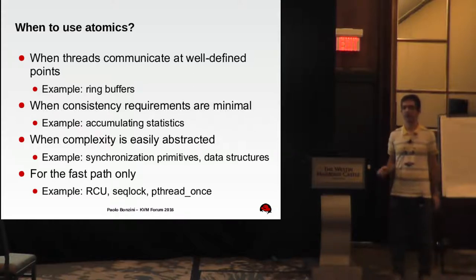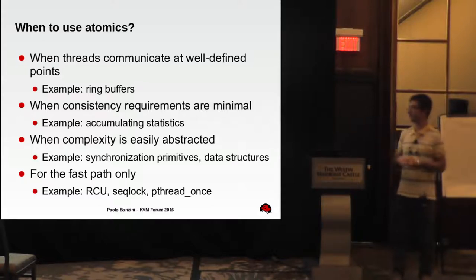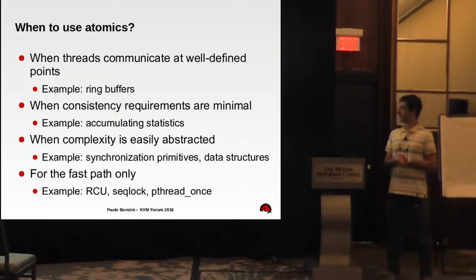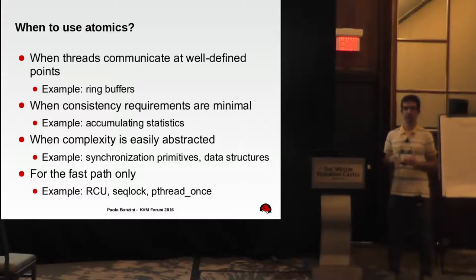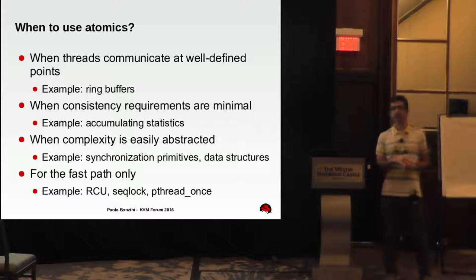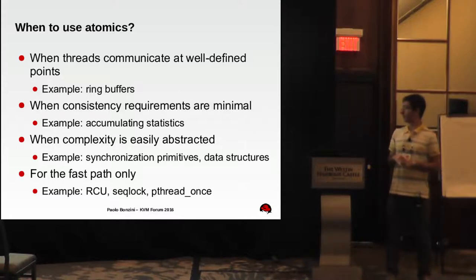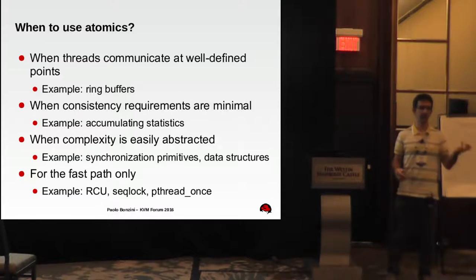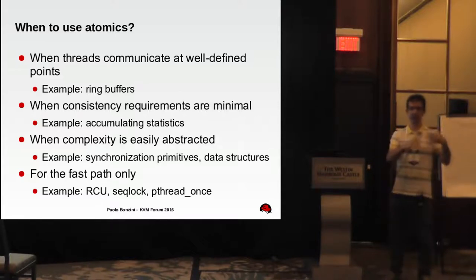If you're using synchronization primitives, you cannot go mutexes all the way down — sooner or later you have to get atomics. Another good idea is to use atomics combined with locks: the fast path uses atomics, and the slow path uses locks. For example, our seqlock uses atomics on the read side and mutexes on the write side. The thread-once also uses atomics on every invocation after the first, and only uses a mutex to synchronize the first caller with any concurrent callers.